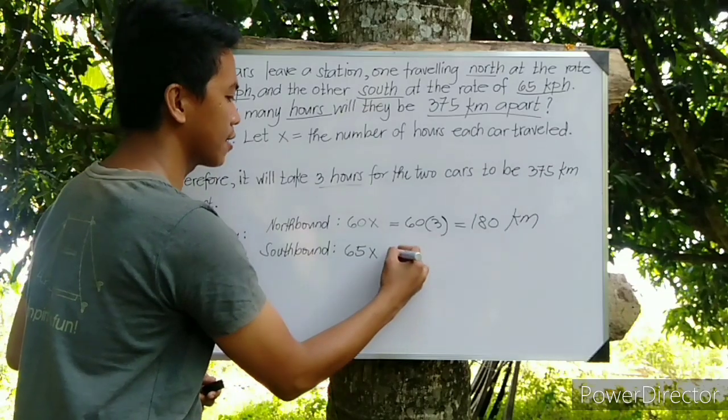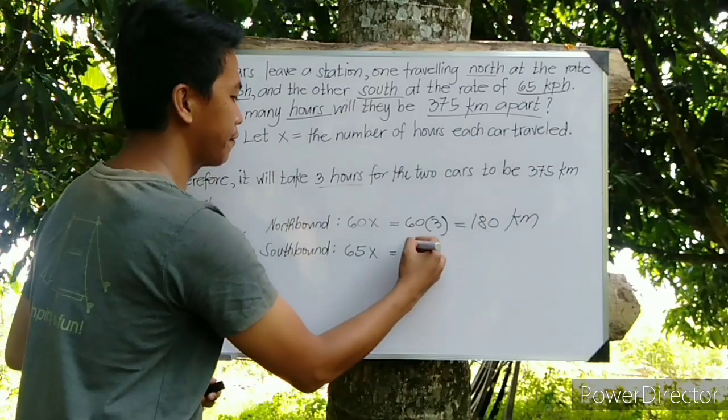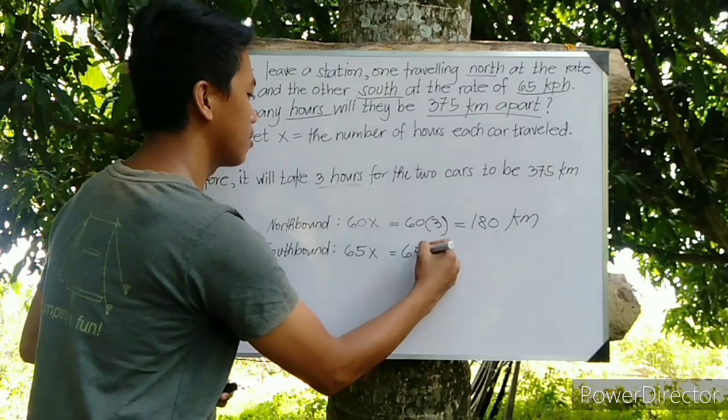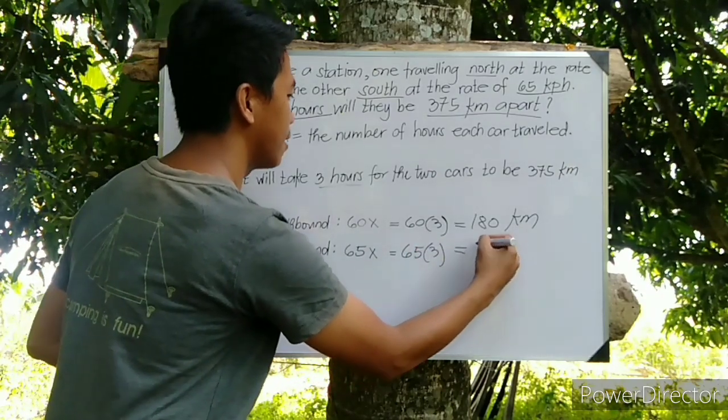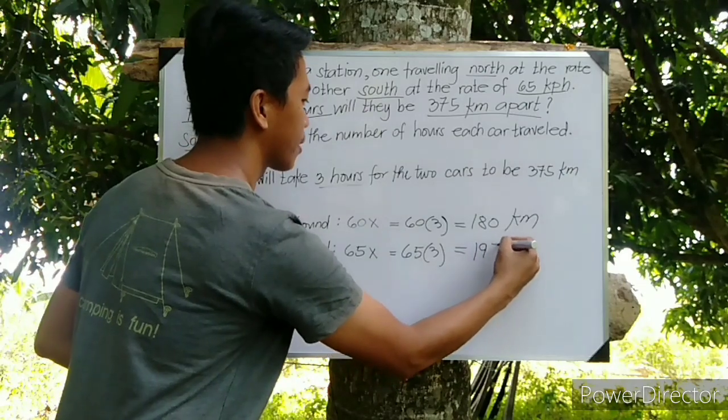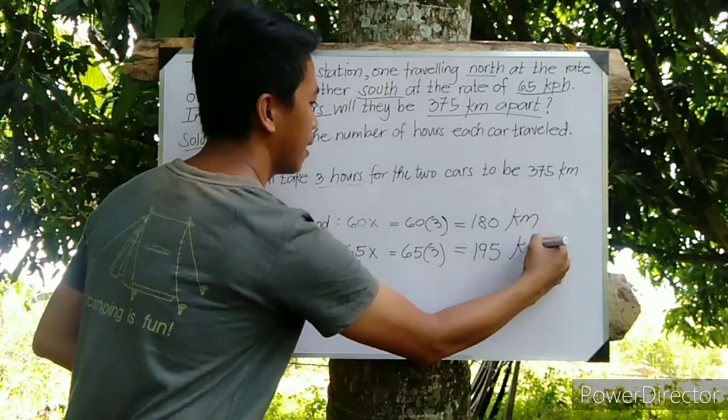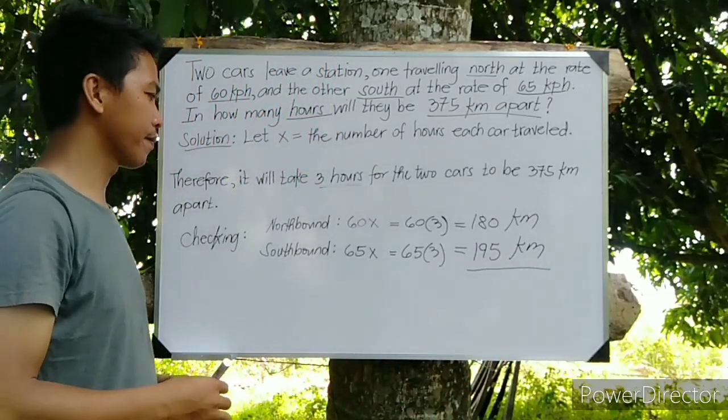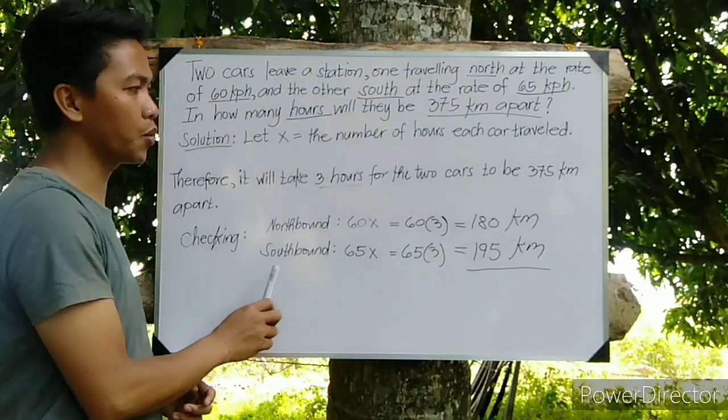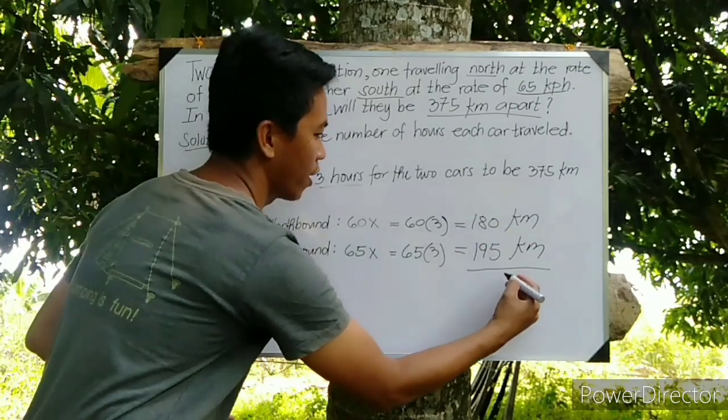For 65X, let's substitute the value of X by 3. So 65 times 3, that is 195 kilometers. Then we're going to find the total of the distances of the two cars, so we're going to add this one.